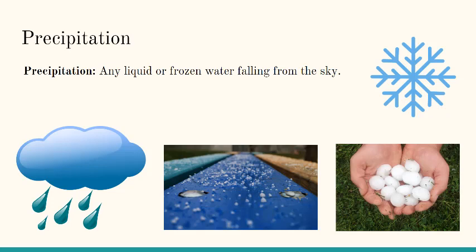Sometimes weather comes in the form of precipitation. Precipitation is any liquid or frozen water falling from the sky. This includes snow, rain, sleet, and hail. The difference between sleet and hail is sleet falls in the winter when it's cold, and hail falls from thunderstorms. Hail is often larger than sleet.